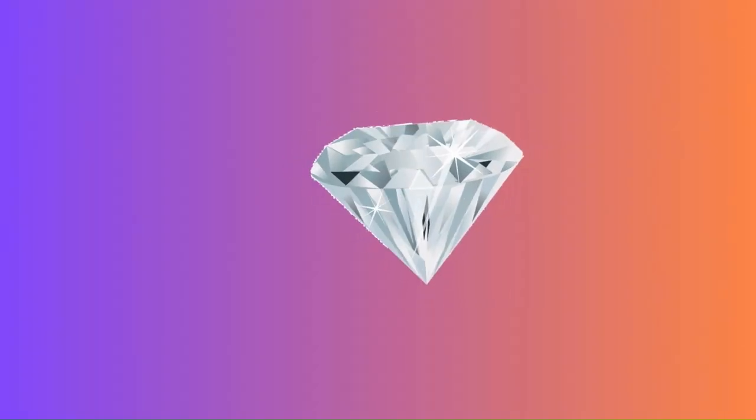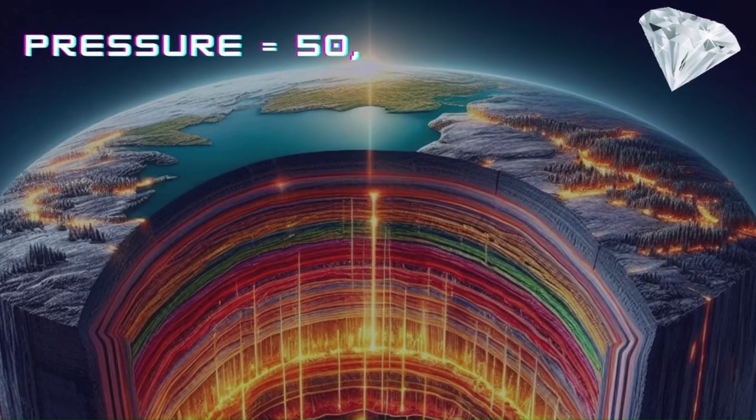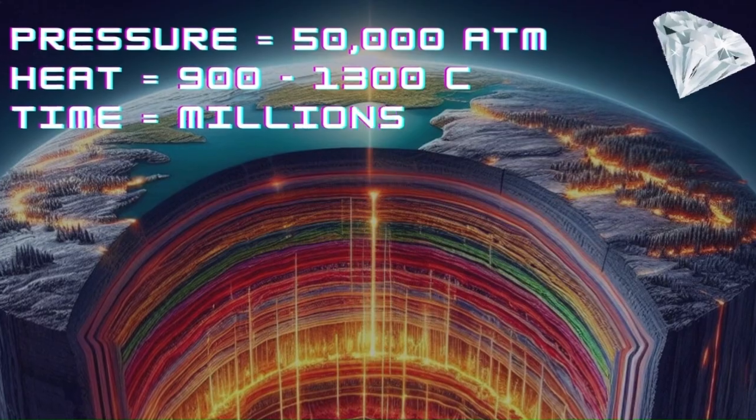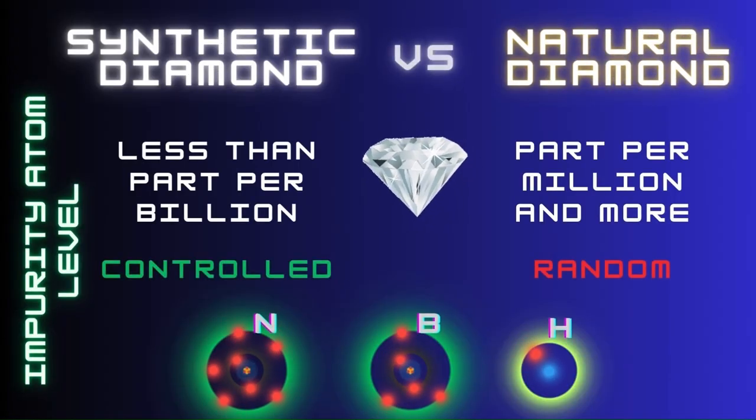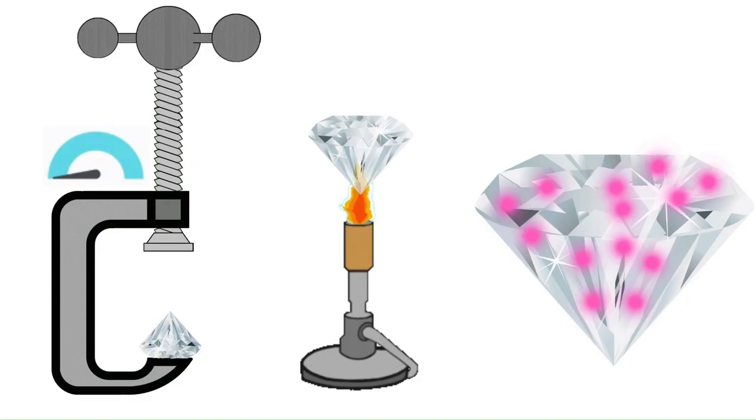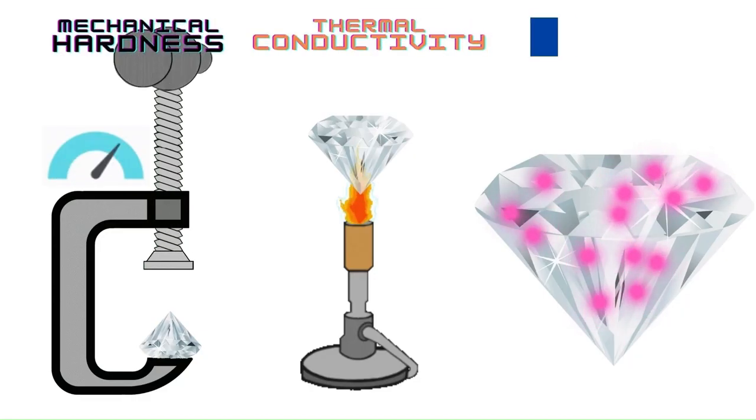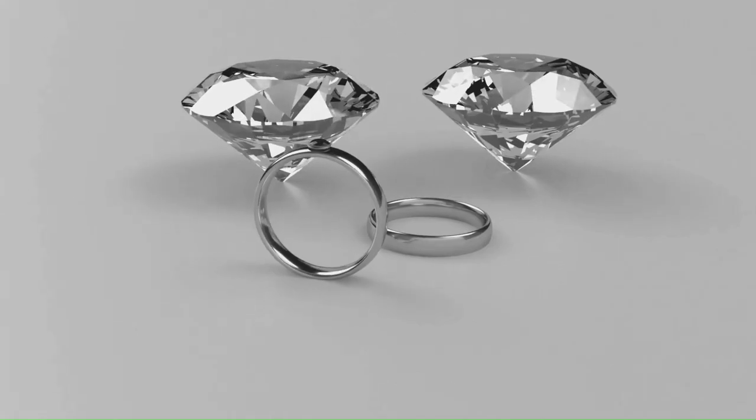What's even more intriguing is that diamonds can be grown artificially in specialized lab environments, replicating the intense conditions found deep within the Earth. In fact, synthetic diamonds may exhibit even higher purity than their natural counterparts. Some have properties such as hardness, thermal conductivity, and electron mobility that are superior to those of most naturally formed diamonds.